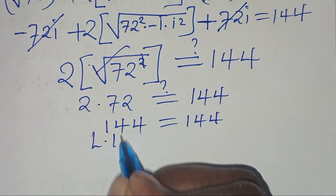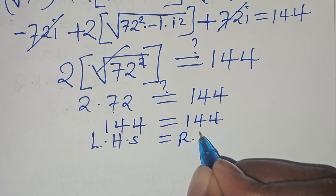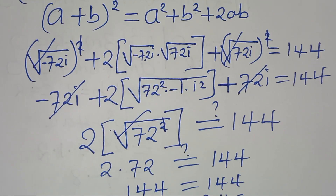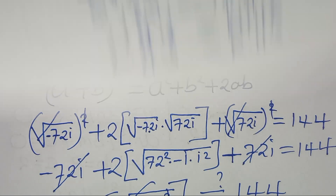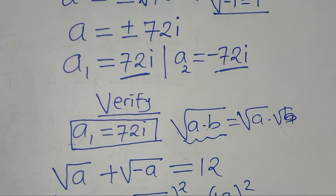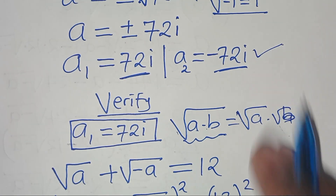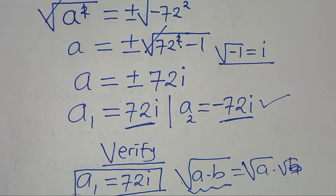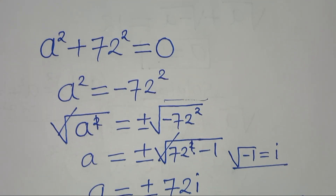This implies that both a₁ = 72i and a₂ = −72i satisfy the equation. Both values are valid solutions. Can you follow the steps? Like this video and subscribe. See you in the next video.